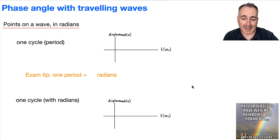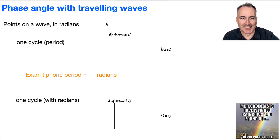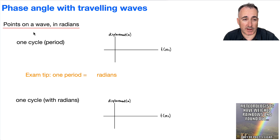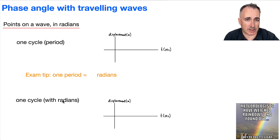Meteorologists have weighed rainbows and found out they're pretty light. We're going to talk about phase angle with traveling waves. First, let's discuss how we label points on a wave — I'll do it the regular way first, then with radians, which is the piece we need.